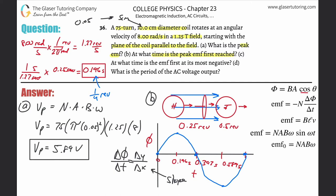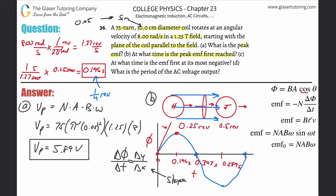At the top of the hill the slope is flat (zero). At the bottom it's flat too. The steepest slope is right at the beginning — at t = 0 — where the tangent line is steepest. That is the point of maximum slope, so the maximum EMF. Therefore, for part (b): time = 0. The peak EMF is first reached at t = 0.